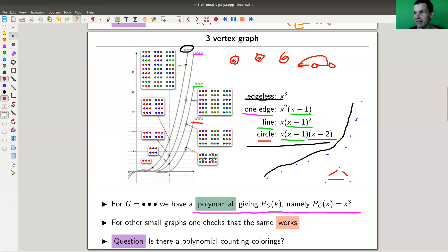And the question is, is it just a coincidence? Of course it's not. Or is there a polynomial counting, a polynomial counting colorings? My color polynomial, right? The chromatic polynomial. And there is. And that's kind of the fun.